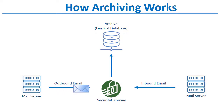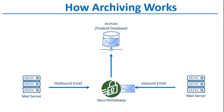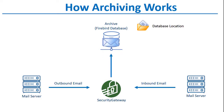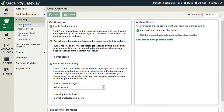When archiving is enabled, Security Gateway stores a copy of all inbound and outbound mail to a Firebird database. As an administrator, you can determine where that database is stored — you can use Security Gateway's internal Firebird database, or you can designate an external database. To enable archiving, simply check this box in Security Gateway under the Configuration section.